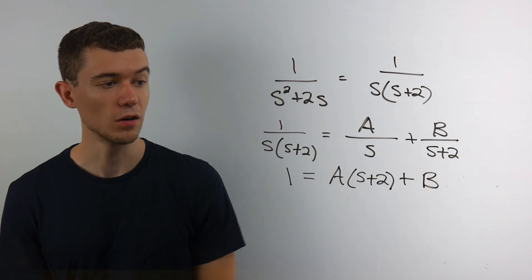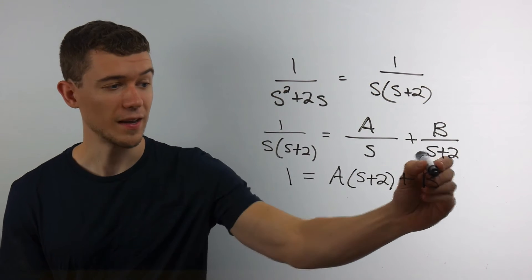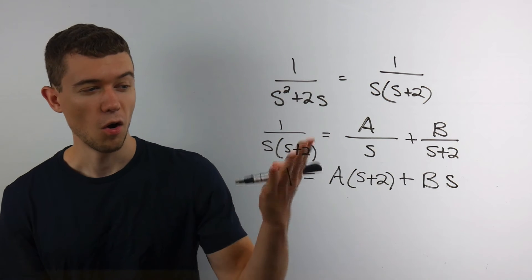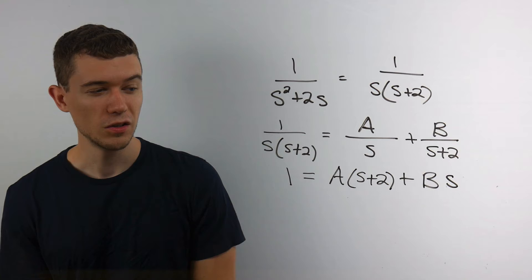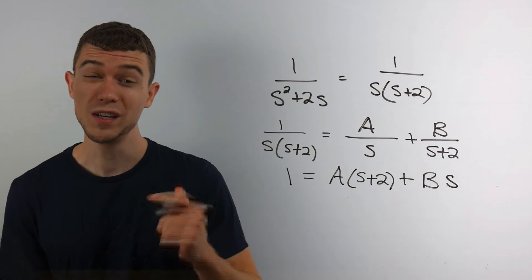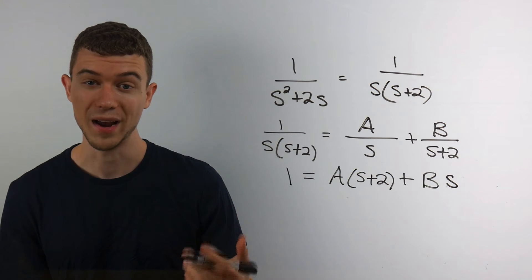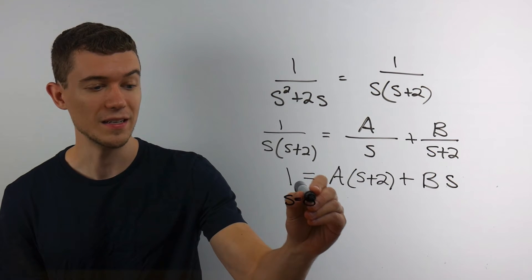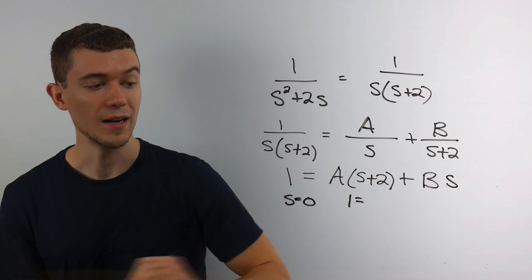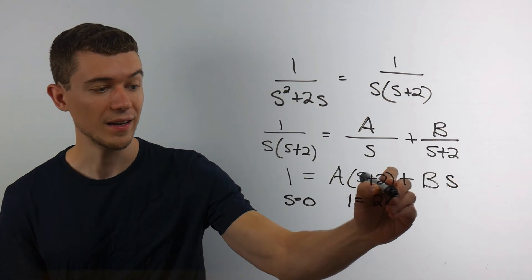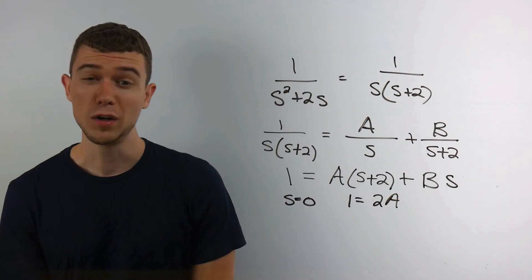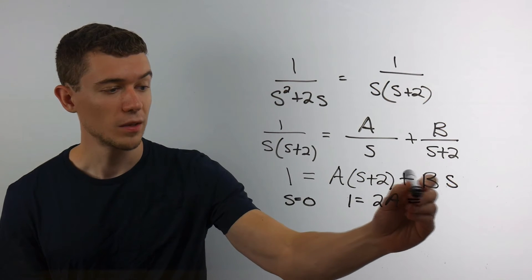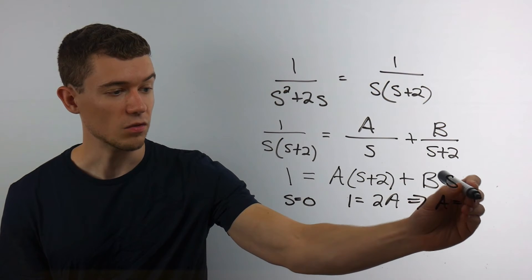And with the b term, the s plus 2s would cancel, and you would just be left with some b s. Well, now what we can do, since they're just linear factors, we can just substitute values for s and figure things out. For example, if I were to let s be 0 in this equation, I'd have 1 equals 2a, and the b term would completely drop out because I'd have b times 0. This would give us that a is 1 half.